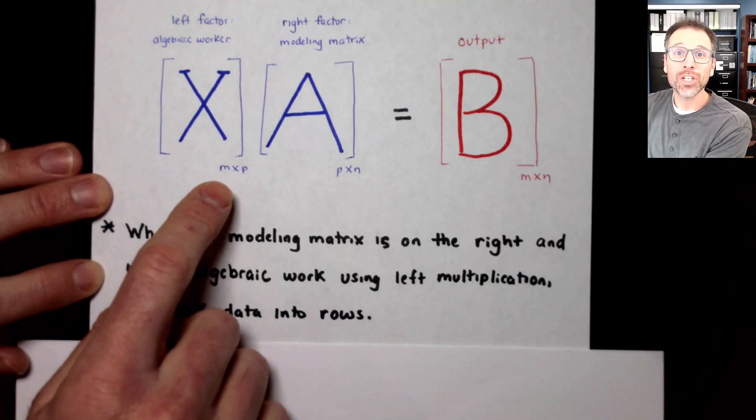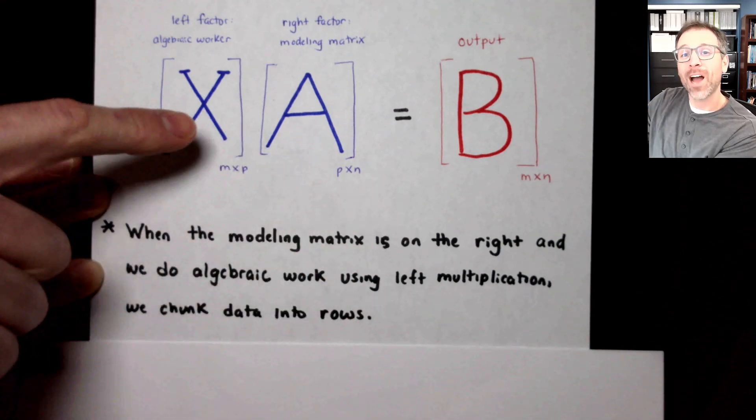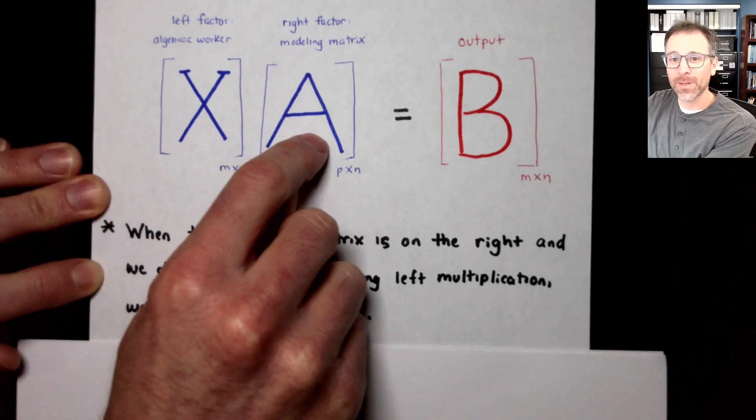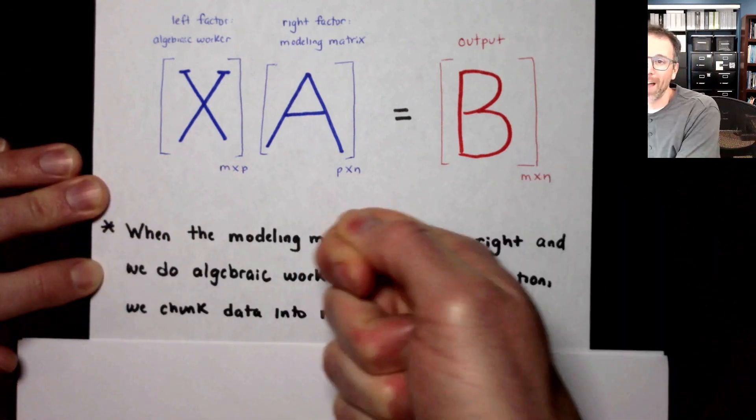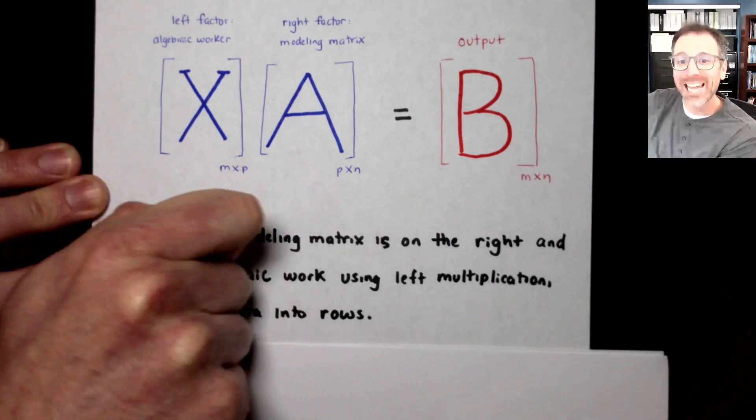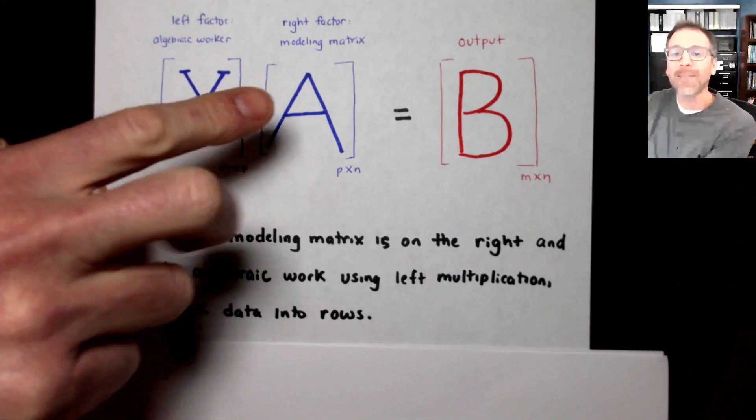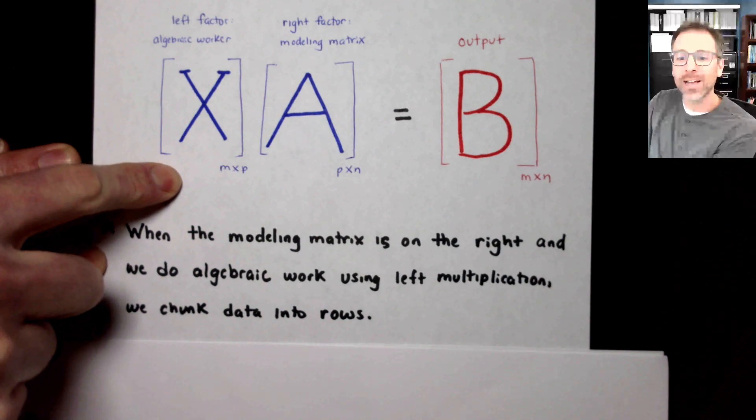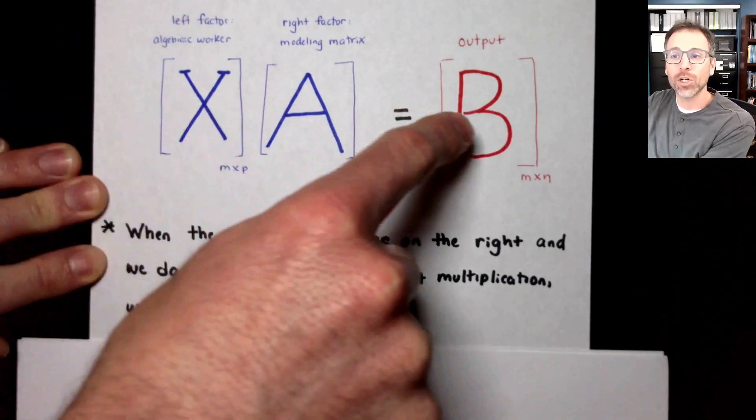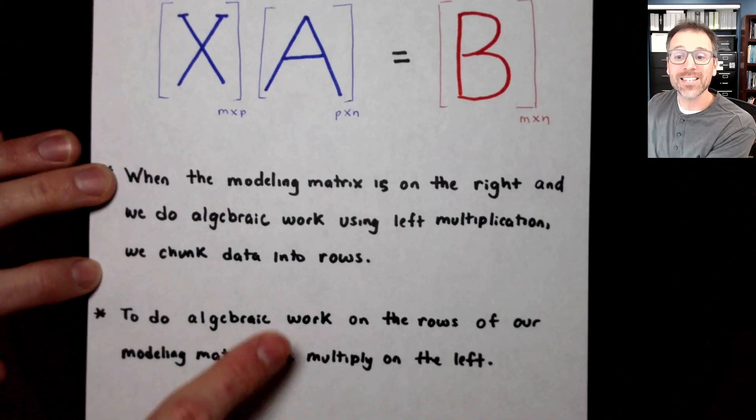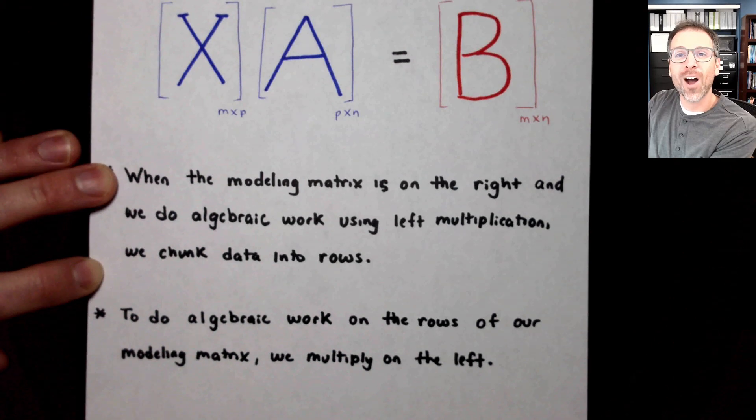Major lesson and intuition of this example is when we have our modeling matrix on the right hand side, and we multiply on the left by x. I like to think about this as a nail and this is the hammer. I'm going to hit A on the left rather than hitting right. When I hit A on the left, I'm manipulating the row. So when the modeling matrix is on the right and the algebraic worker is on the left, we chunk all data into rows. We cut A into rows. We cut X into rows. We cut B into rows. Another way to say this is to do algebraic work on the rows of a modeling matrix, we multiply on the left.